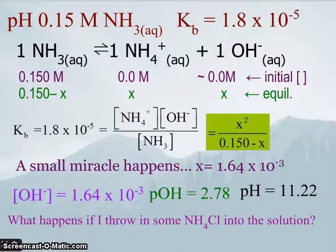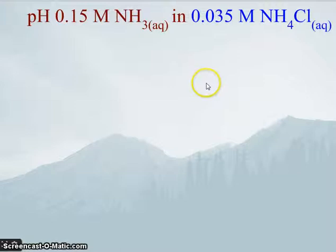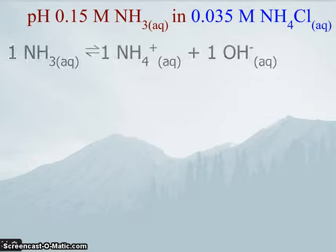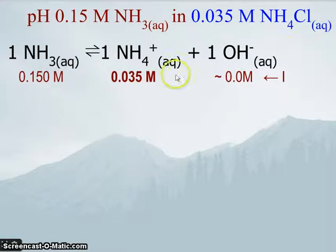So this is the same concentration, 0.15 molar ammonia. But this time, we're going to put it in a solution that's 0.035 molar in ammonium chloride. And again, that dissociates into ammonium ion and chloride ion. And the chloride ion, we don't care about. So the only thing that's different in this calculation is that we have a small amount of ammonium ion in there before.